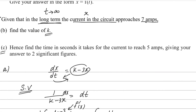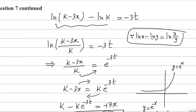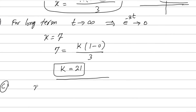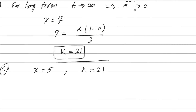Since the question uses the word 'hence', we use the previous result k = 21. We need to find the time in seconds for the current to reach 5 amperes, giving the answer to 2 significant figures. For this last part, current x = 5 and k = 21; we substitute both values into the equation.